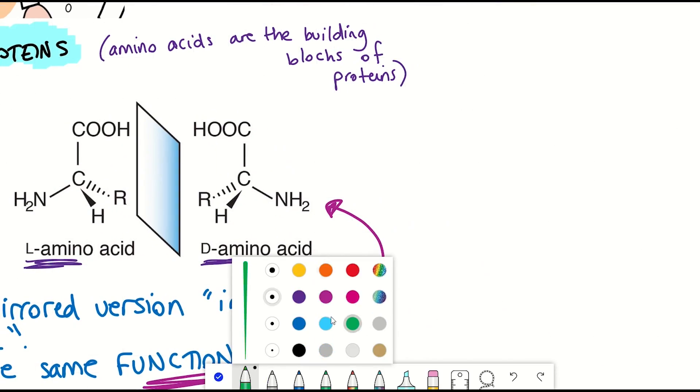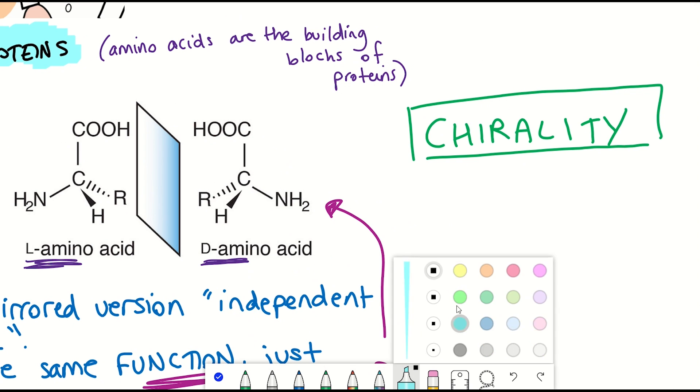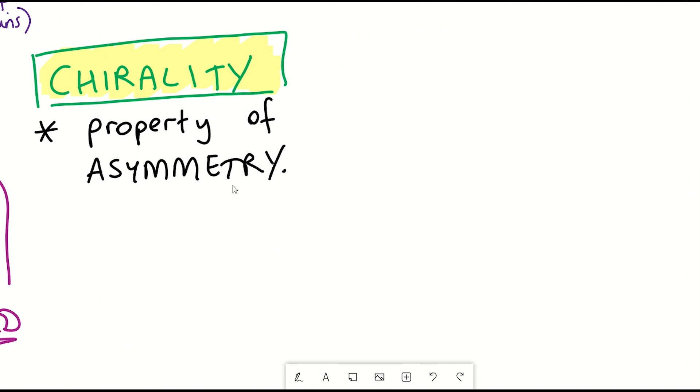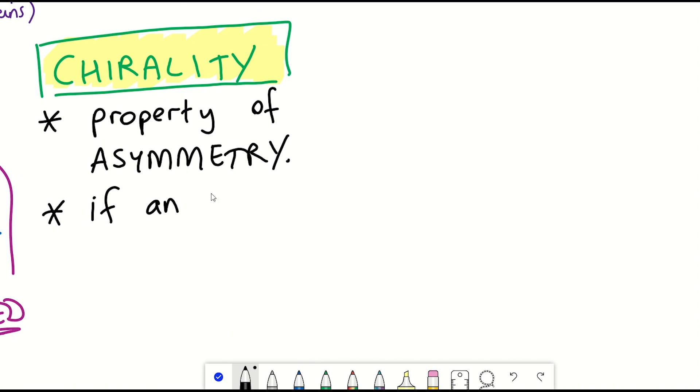So that concept that I'm alluding to is known as chirality, and it's a property of asymmetry that's important in several branches of science. And so the definition is that if an object or a system is chiral, it is distinguishable from its mirror image.